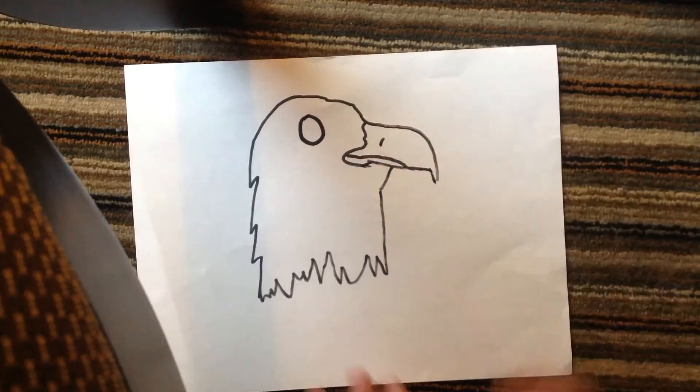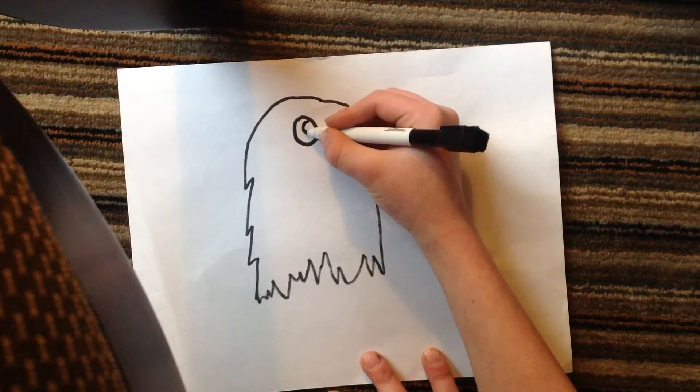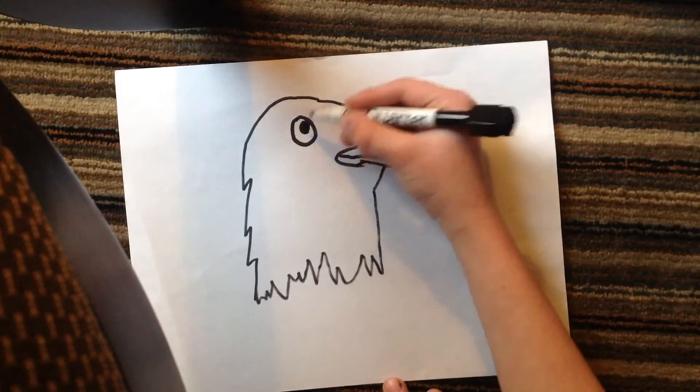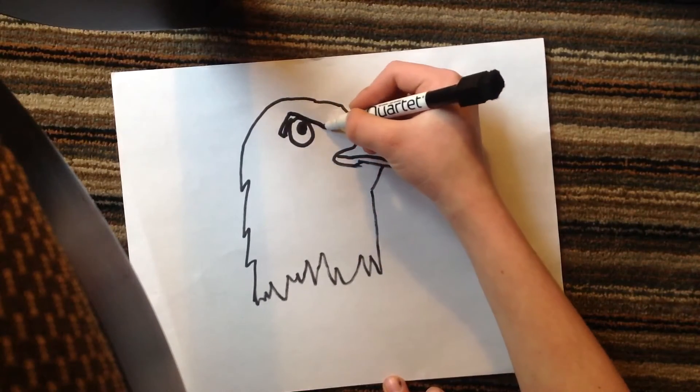So what you do, you draw kind of, not too big, but like you draw kind of a big circle. And then you draw another smaller circle inside. And then you take your marker or pencil and go like this.